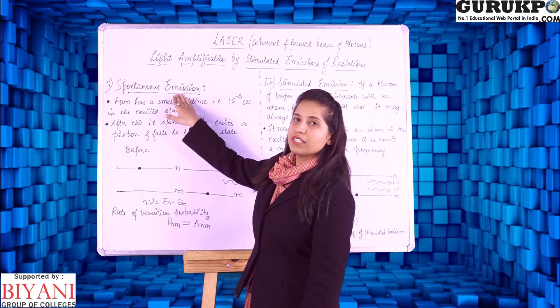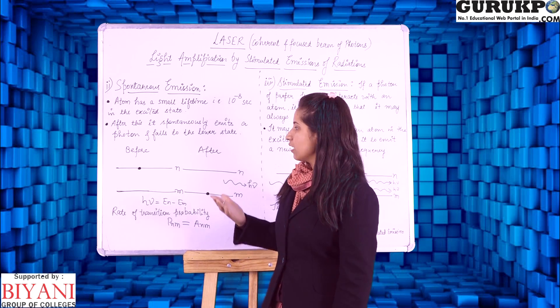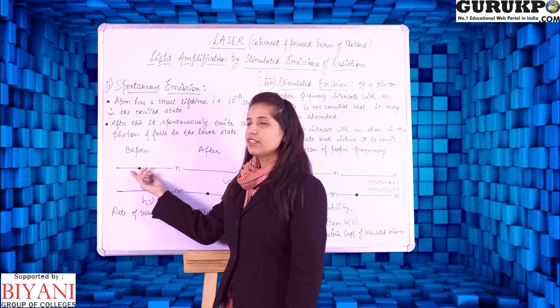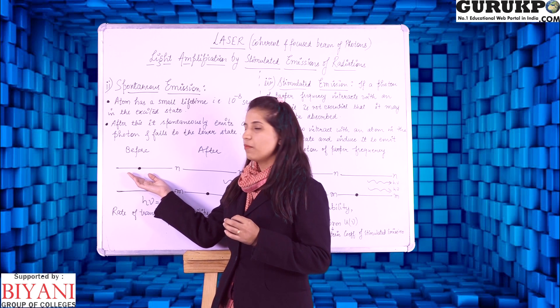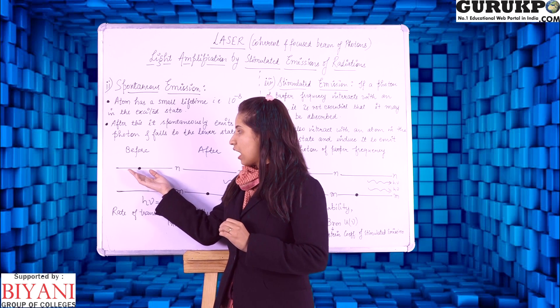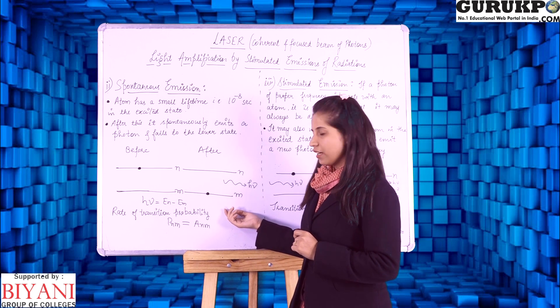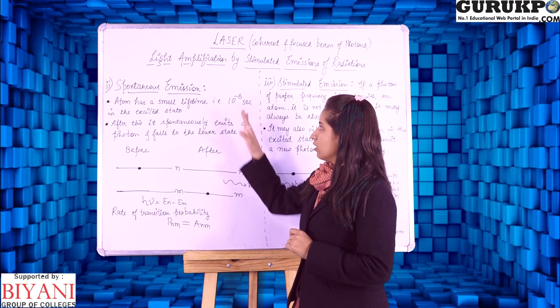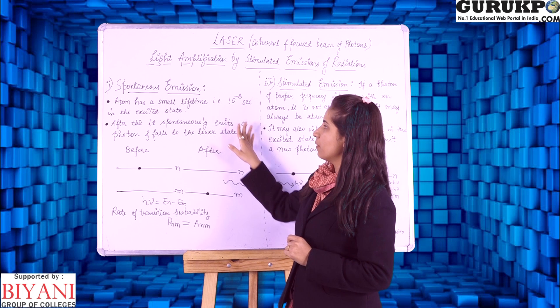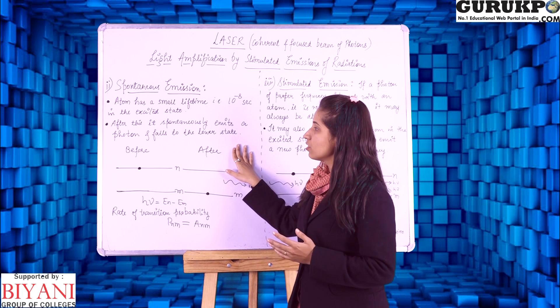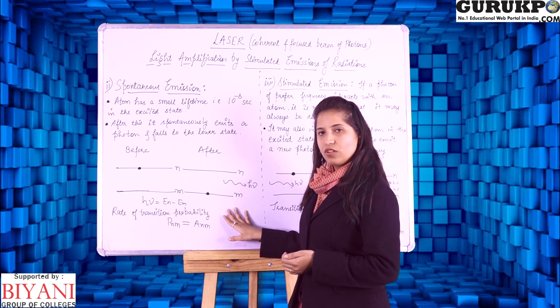Next we will move to the spontaneous emission. As the name itself says spontaneous means naturally. That is if the atom was in excited state. So in the excited state atom remains only for the 10 to the power minus 8 seconds. After that after emitting a photon it moves to the ground state that is the emet state. So this is itself the spontaneous emission that is atom has a small life time that is 10 to power minus 8 seconds in the excited state. And after that it spontaneously emits a photon and falls to the lower state.